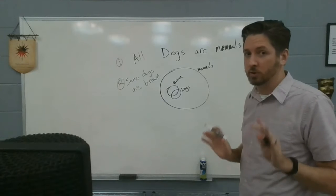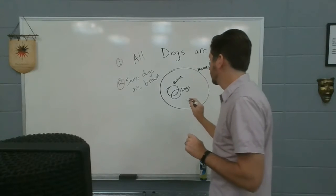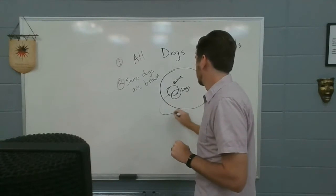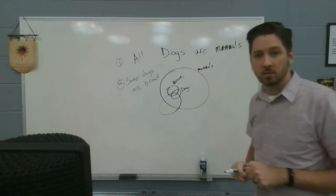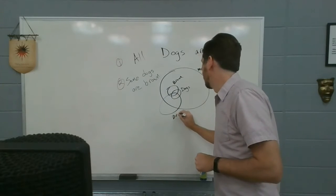Or, this is why Euler diagrams are important. I can also draw it like this. And let this be my category for brown.